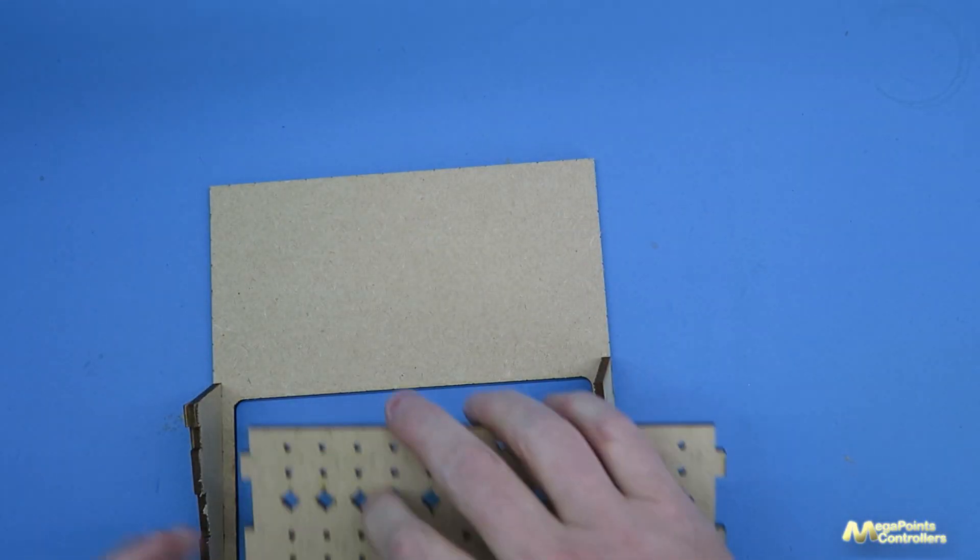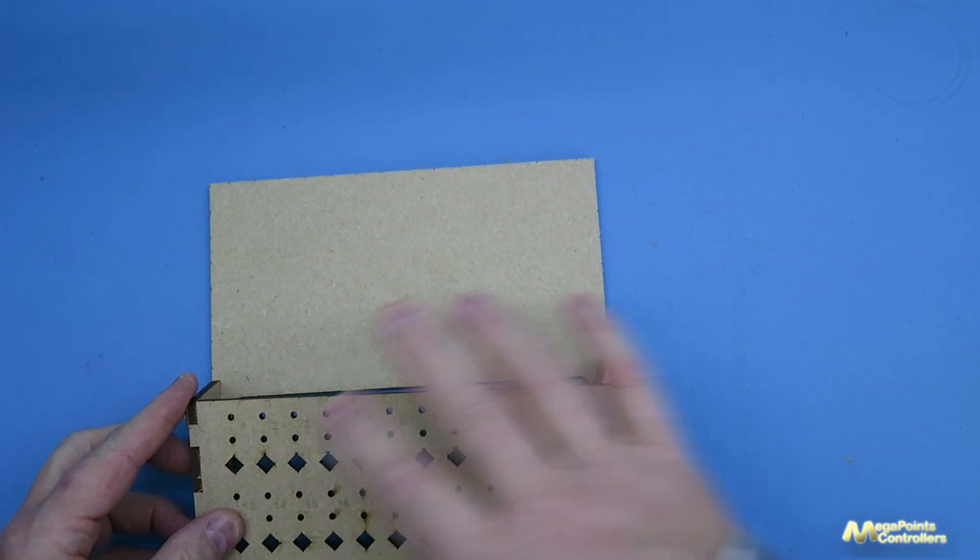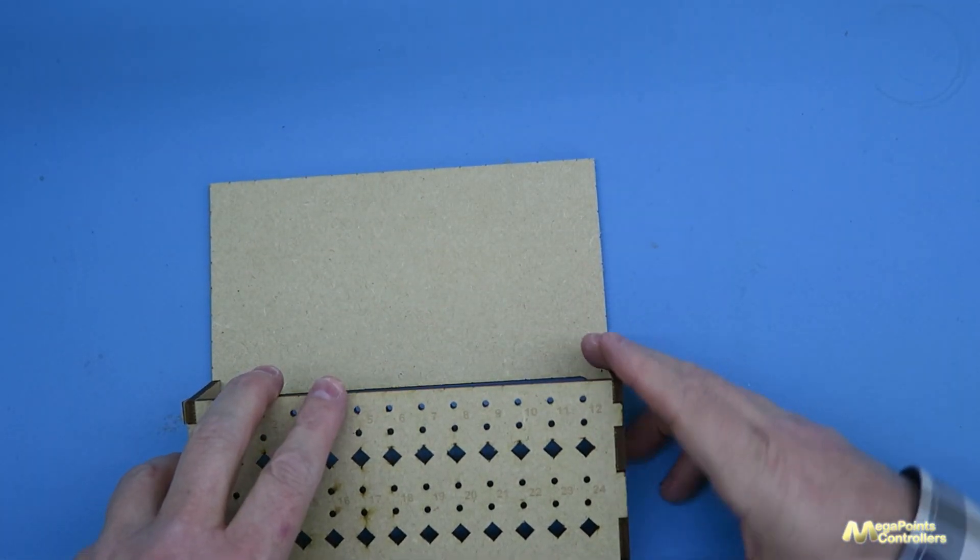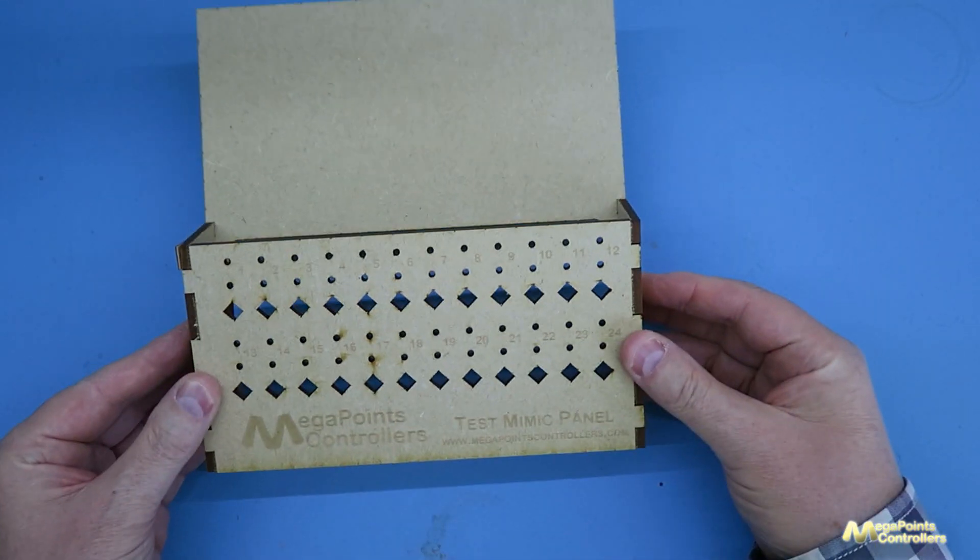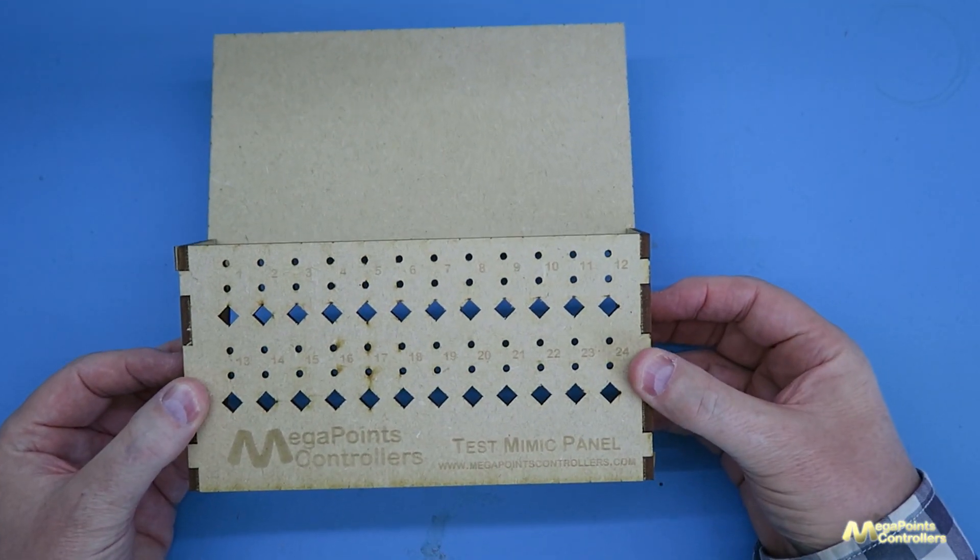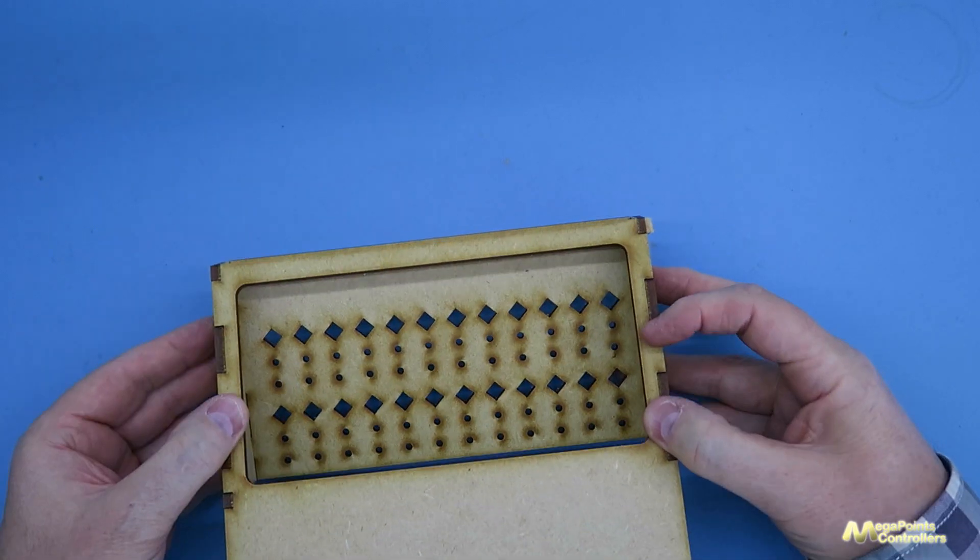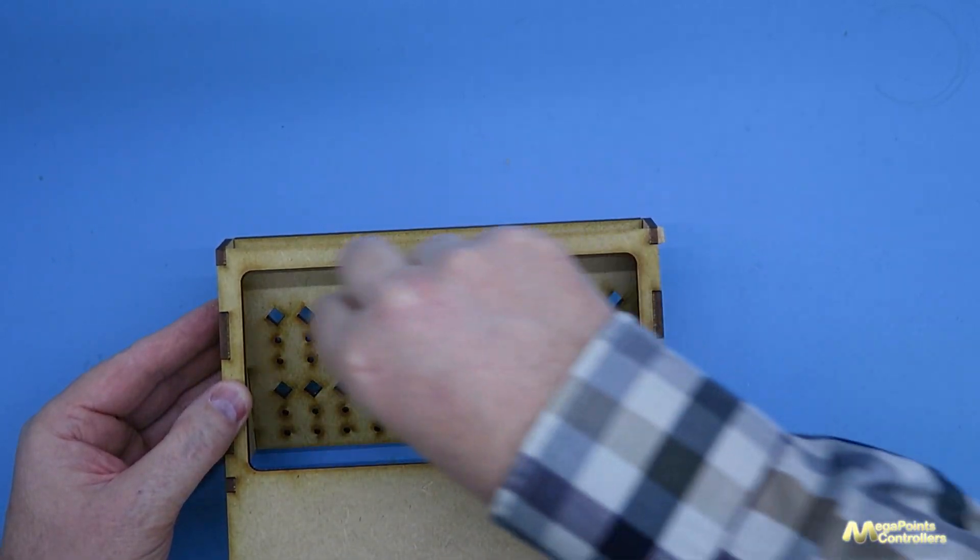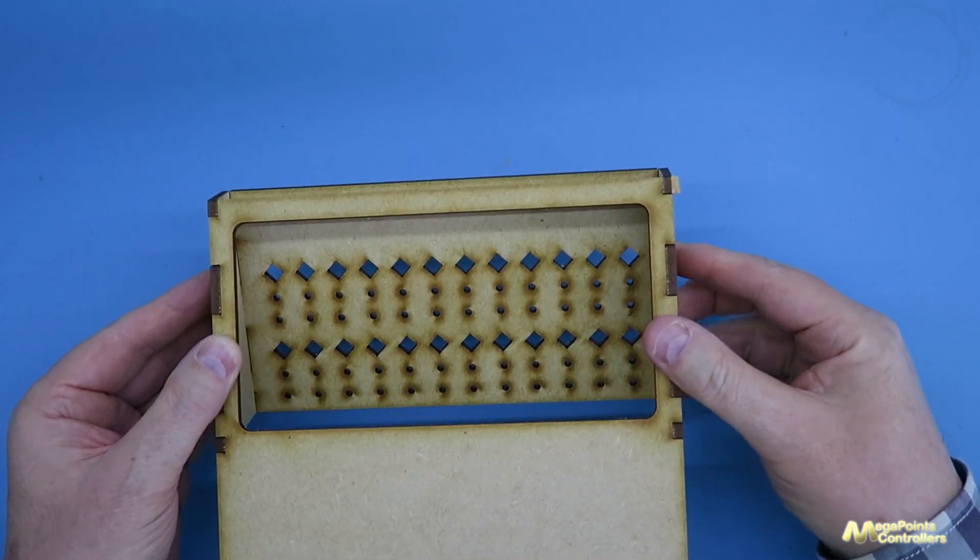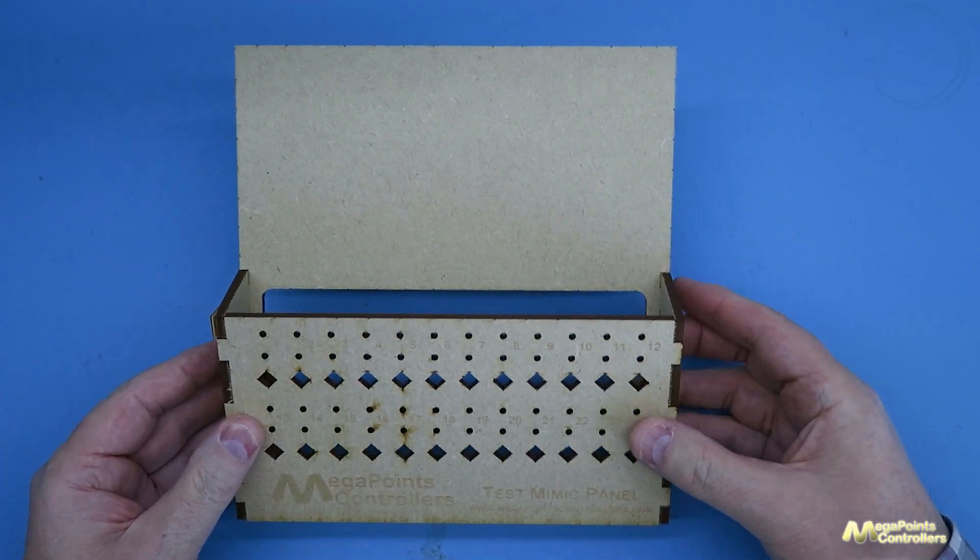Attach the panel like so and you have your temporary or test mimic panel and there's plenty of space underneath so you can get your hands in to put the screws in and plug in and out all of the LEDs and connectors.